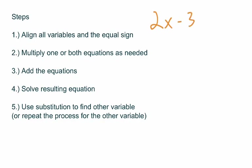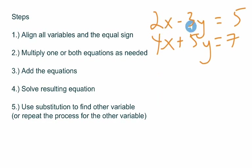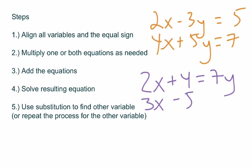If you have something like two X minus three Y equals five, and the other equation is four X plus five Y equals seven, the first step means that you need your X's lined up, your Y's lined up, your equal signs lined up, and your constants lined up. You could also see something like two X plus four equals seven Y and three X minus five equals negative five Y — your X's, constants, equals, and Y's are all still lined up. A lot of times these problems come already lined up, but if they're not, you might have to do a little adding and subtracting to get the pieces lined up.